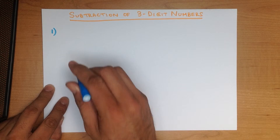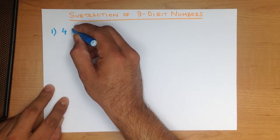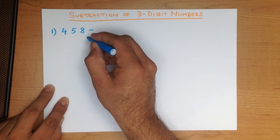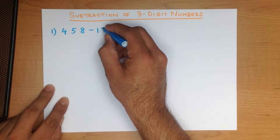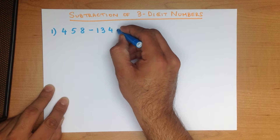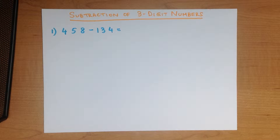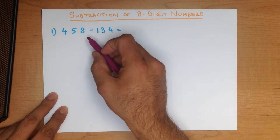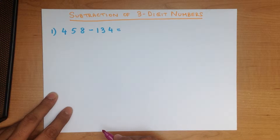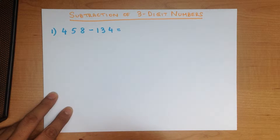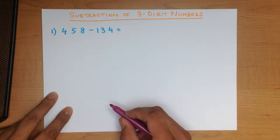What is 458 minus 134? The first step is to write these numbers down in the vertical format. Make sure you write this properly and correctly. If you do that, the next part — calculating the answer — is much, much simpler.